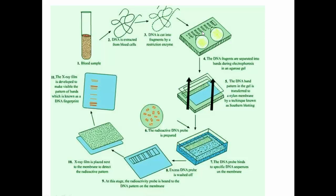When the bands are found, the DNA band pattern in the gel is transferred to a nylon membrane — as used in Southern blotting. A radioactive DNA probe is then prepared. These radioactive DNA probes are complementary to the band sequences on the nylon membrane, and the radioactive DNA probe binds to the specific DNA sequence on this membrane.